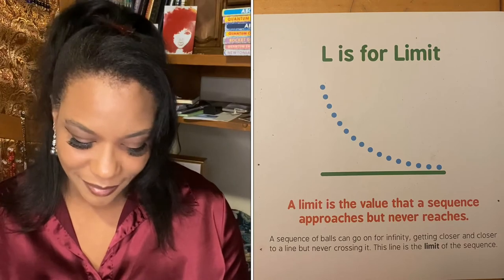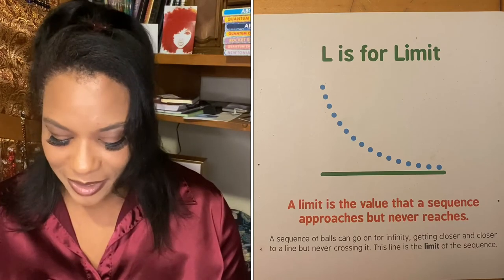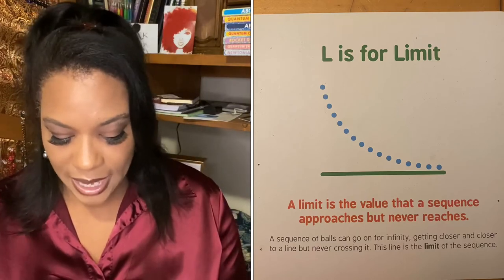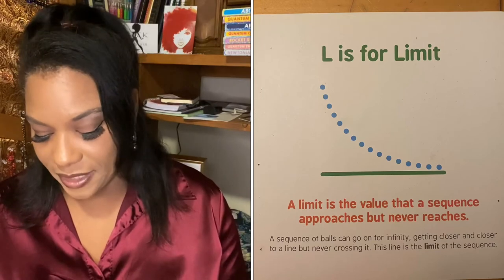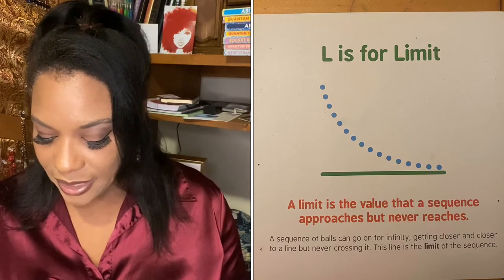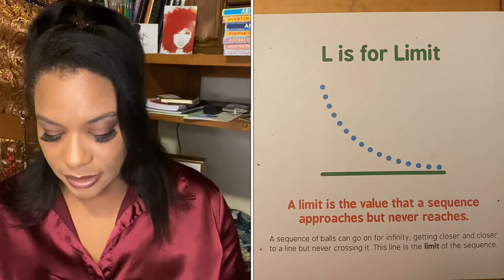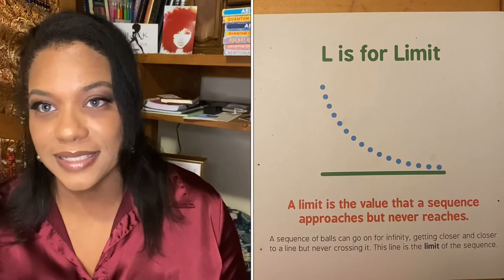L is for limit. A limit is the value that a sequence approaches but never reaches. A sequence of balls can go on for infinity, getting closer and closer to a line but never crossing it. This line is the limit of the sequence.